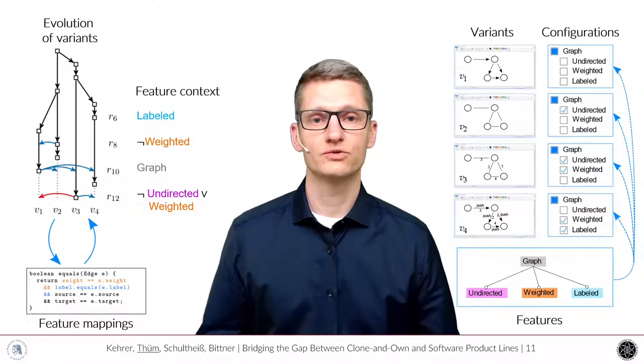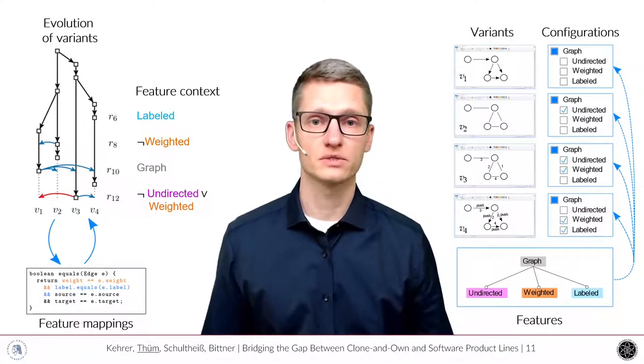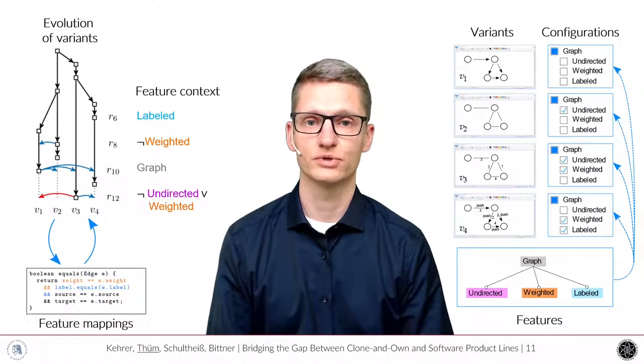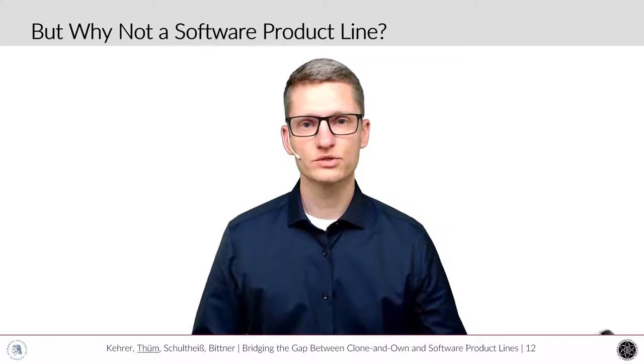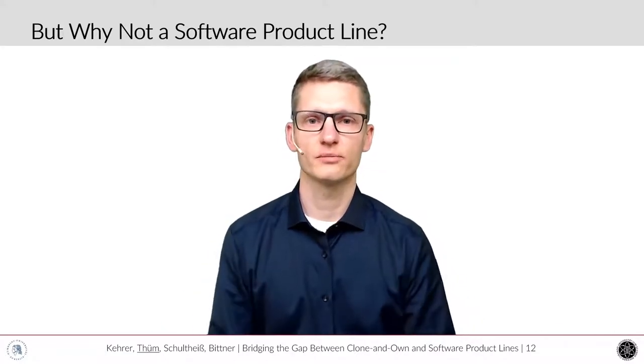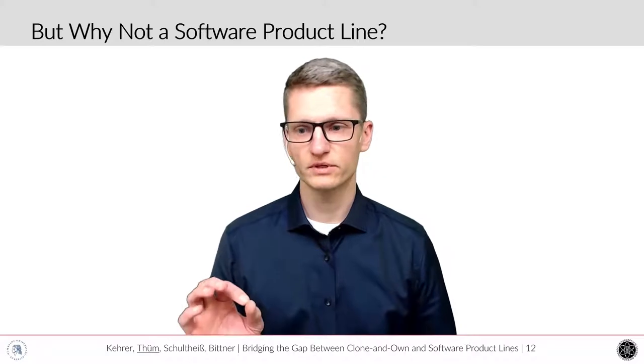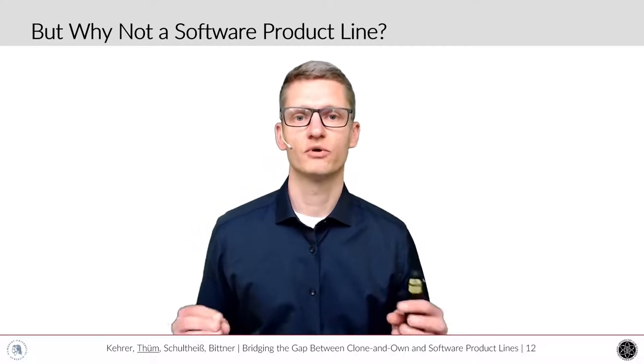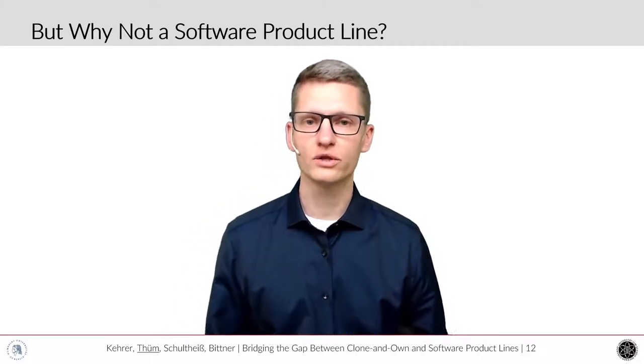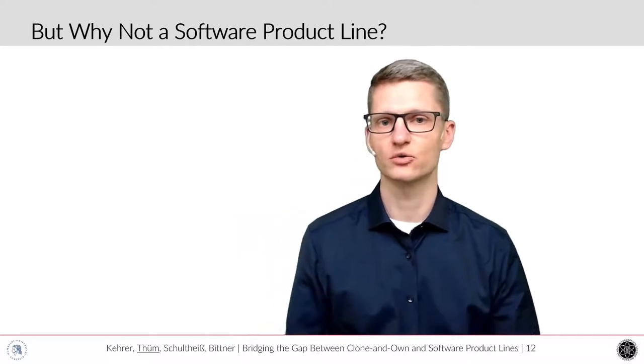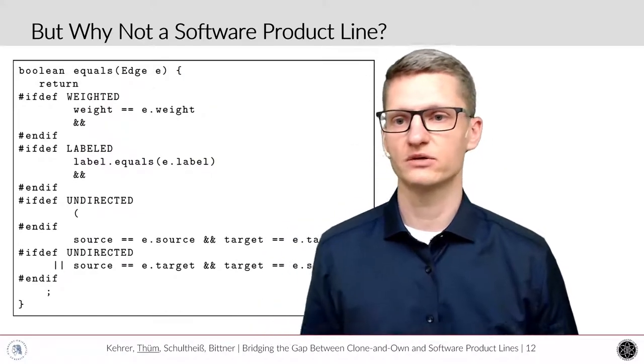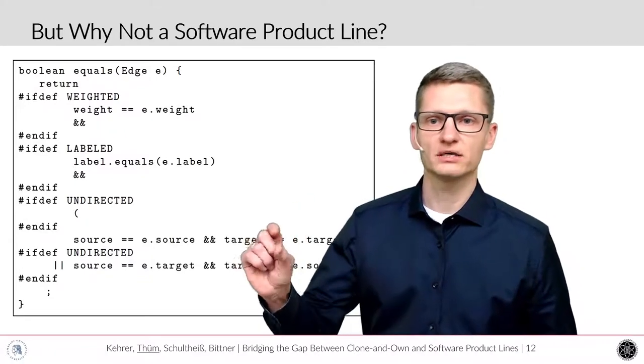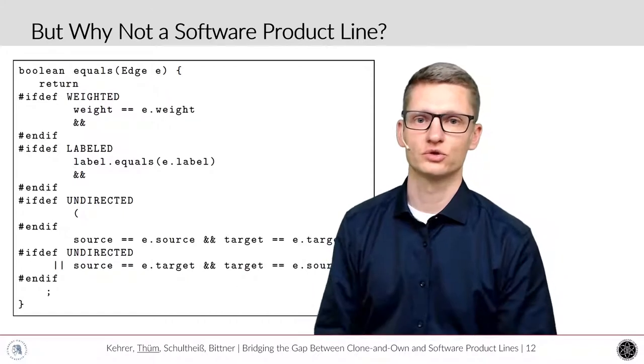With VariantSync, we try to overcome a situation that is very cumbersome and requires a lot of effort in state-of-the-art clone-and-own development in practice. So some of the researchers might ask, why not use a software product line? I will give a very brief introduction what a software product line is. In a software product line, we have a mapping from features to code and all the code that we have is mapped to features, but we have a single code base. Such a code base, in the case of Linux, would use a C preprocessor. So preprocessor directives mark the parts of the code and which parts of the code belong to which feature.